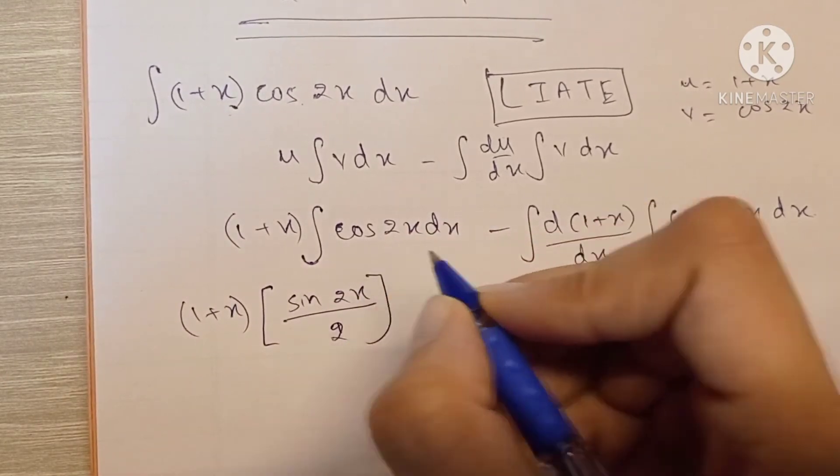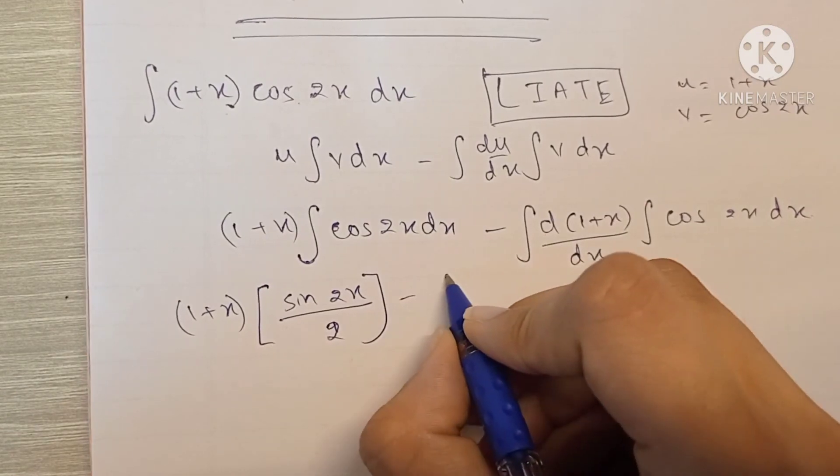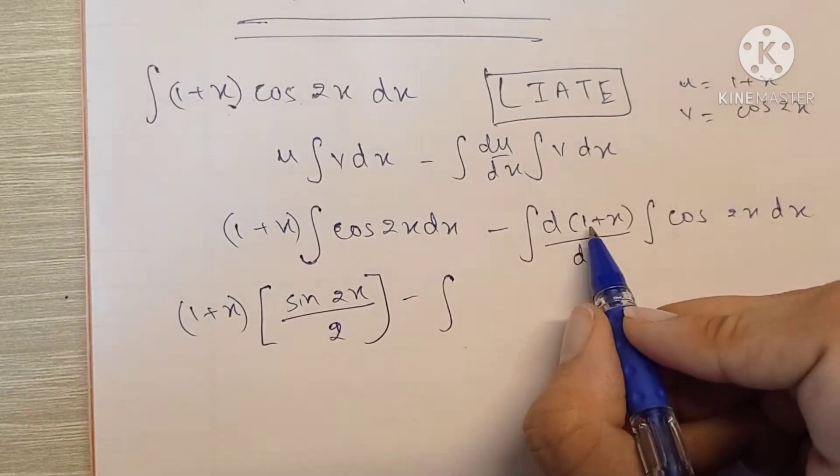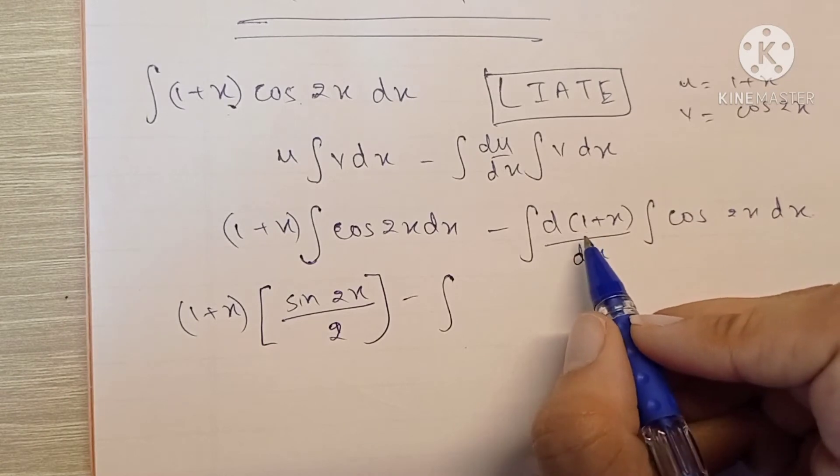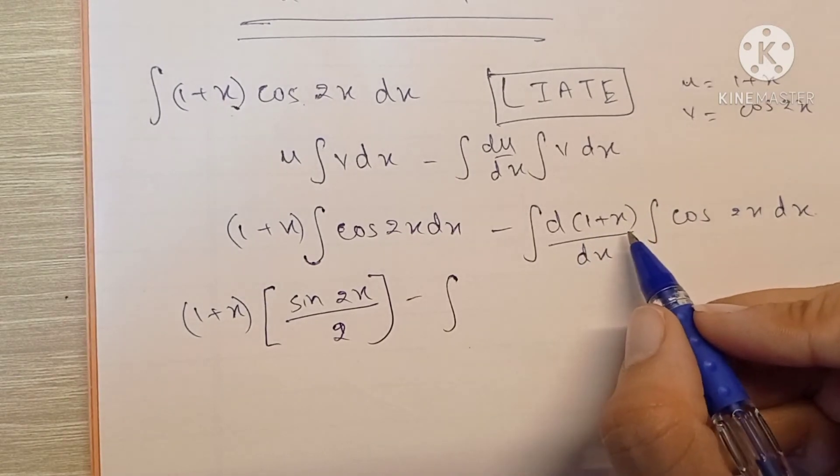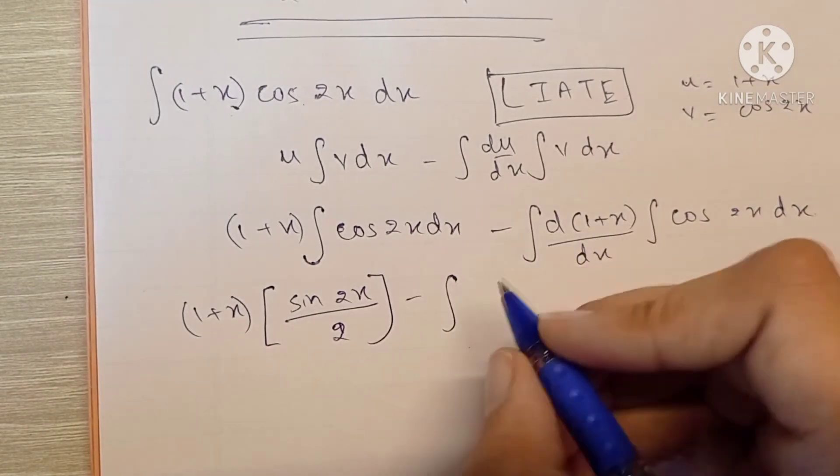Minus integration of differentiation of this. Differentiation of 1 is 0 because it's a constant. Differentiation of x is 1, so ultimately the whole term comes out to be 1 times sin(2x) upon 2 dx.